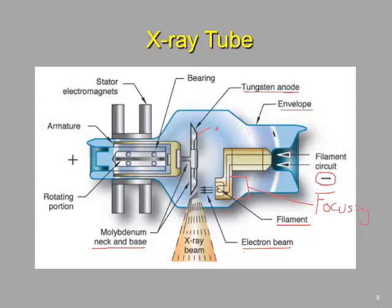That's why we have this heavy lead housing around the x-ray tube — to protect us from any x-rays being produced in a direction other than what we want. The x-ray beam will exit through a window made out of aluminum. In this area there is an aluminum window in the housing that permits x-rays to exit the tube and go directly into the collimator.